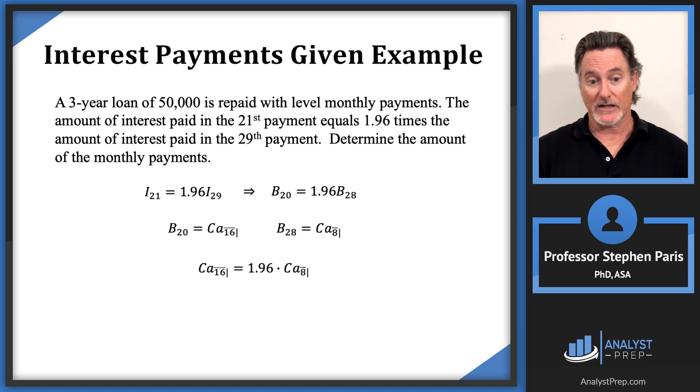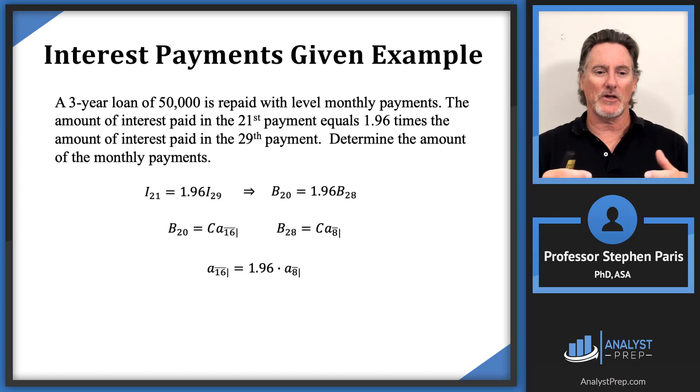And I've got this equation that a angle 16 is 1.96 times a angle 8. What's going to make this all work is that I've got, based on the information given to me in the problem, I've got this relationship between a angle 16 and a angle 8.